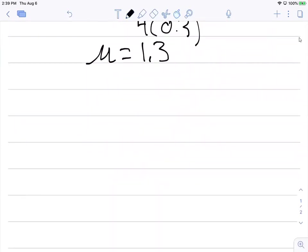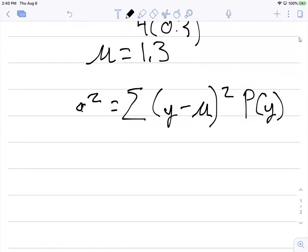The next calculation is a standard deviation. Well before we calculate the standard deviation, we'll calculate the variance sigma squared. That's going to equal the sum of all the values y minus the mean mu we just calculated squared, and then we multiply them again by the probabilities of observing each value y.